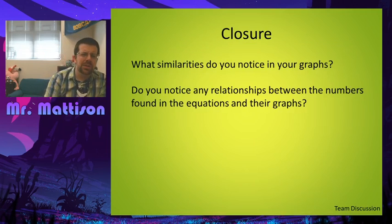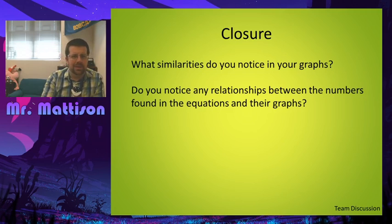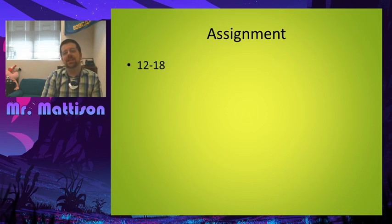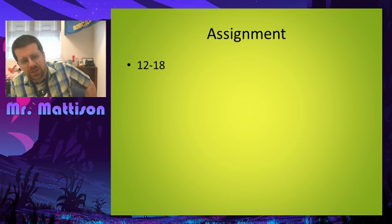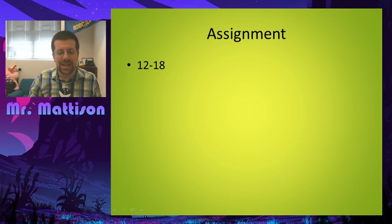Alright. For our closure, let's think back to those graphs. We just went over in Desmos what similarities, what caused different things, how did those numbers relate, like we saw that one number caused stuff to move left and right, one number caused it to go up or down, one caused it to change how steep it was, think about how that actually worked out for us. Alright. Homework for this section. Again, this is 1-1-2. Make sure you label it. We're doing 12 through 18. Alright. I'll talk to you guys next time.